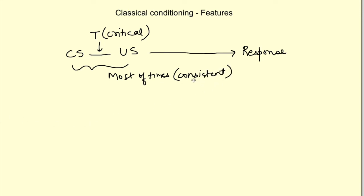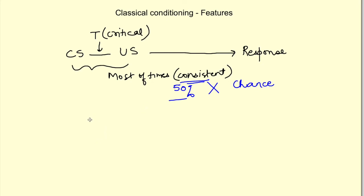Consistency is very important. If the new stimulus is paired with the unconditioned stimulus only 50 percent of the time, the animal will not learn the association, because such an association may occur by chance in the environment. The whole point of learning the association would be wasted. By learning the association between two different stimuli, the animal — or for that matter any species — actually learns to predict events in the environment.